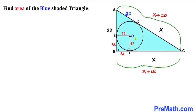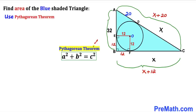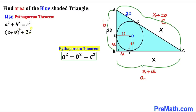Now let's focus on this blue right triangle whose side lengths are: AB = 32 units, BC = X plus 12, and AC = X plus 20. We are going to apply the Pythagorean theorem to find the value of X. Using A² + B² = C², with the hypotenuse C = X plus 20, side A = X plus 12, and side B = 32, we get: (X + 12)² + 32² = (X + 20)².